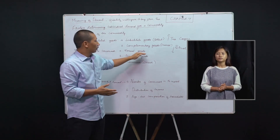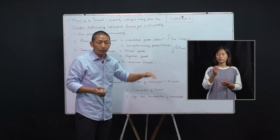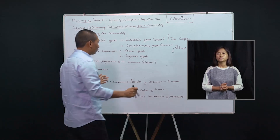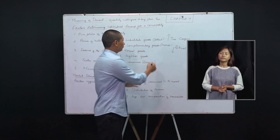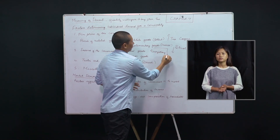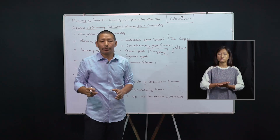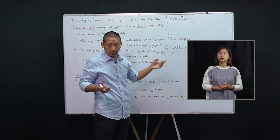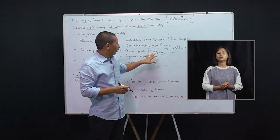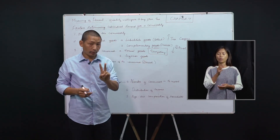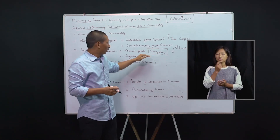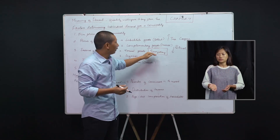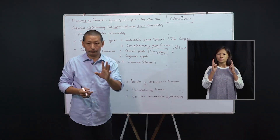Normal goods are those goods whose demand by a consumer increases as his income increases. For example, everyday milk — in all households, we drink tea in the morning, in the afternoon, sometimes before we go to sleep. Suppose you are buying just two packets of everyday milk in a month, but because your income has increased, your demand for everyday milk is now rising. So this everyday milk is a normal good for you. Normal goods are those goods whose demand by a consumer will increase as his income increases.